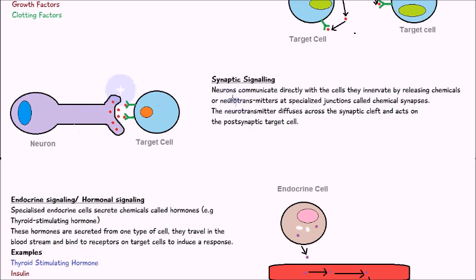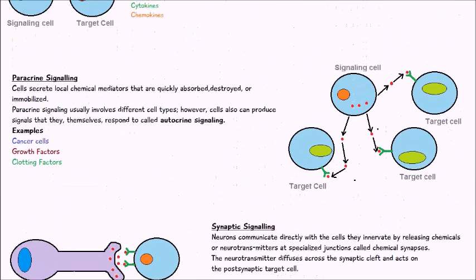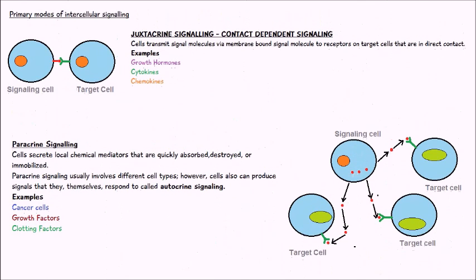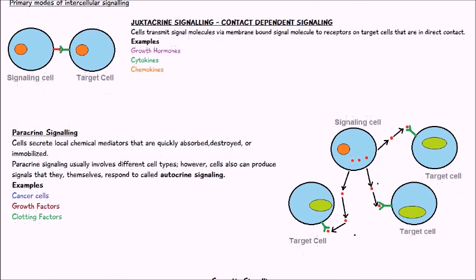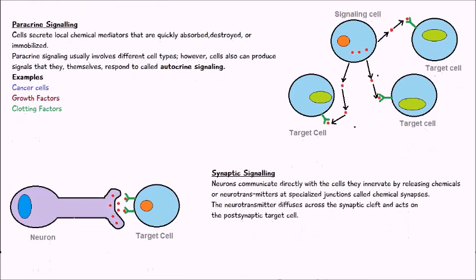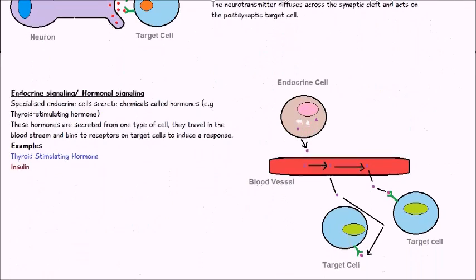Something important to know about the first three types of signaling — juxtacrine, paracrine, and synaptic — is that they are all very local forms of signaling. The signal molecule doesn't have to travel very far, or doesn't have to travel much at all.